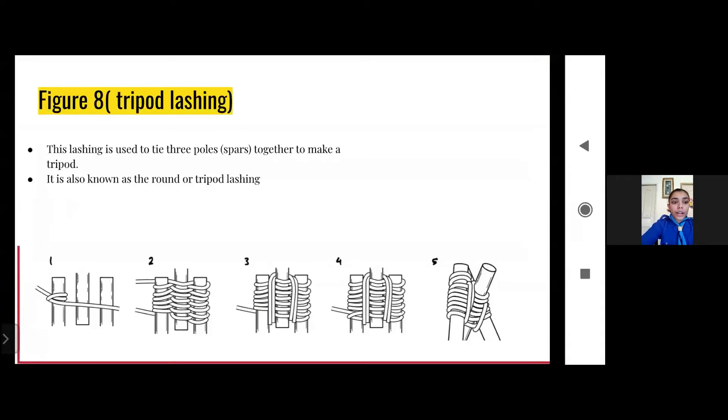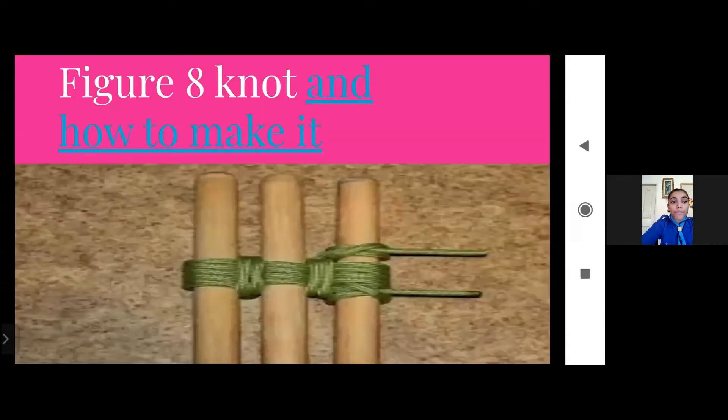So these tripods are the base of many engineering projects which make this one of the most important lashings you need to know. It is a part of many scouting projects. This figure of eight lashing is also known as round or tripod lashing. It is used to bring together three spars to form a tripod. Now let's watch a video to see how we make it.